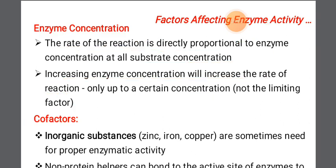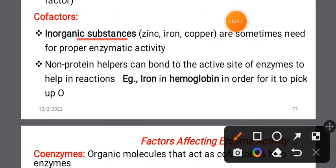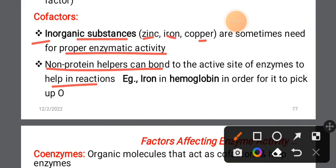Cofactors are inorganic substances — such as zinc, iron, and copper — that are sometimes needed for proper enzymatic activity. They are non-protein helpers that can bond to the active site of the enzyme to help the reaction proceed. For example, iron is a cofactor in hemoglobin.